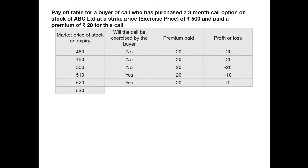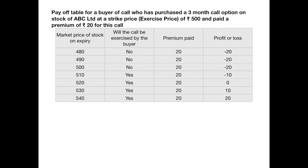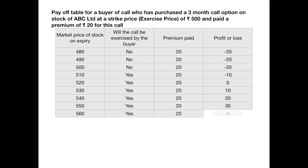If the market price is 530 and he has a right to buy the stock at 500, he's going to exercise it, making a profit of 30 rupees, but he's paid a premium of 20, so his net profit is 10. At 540, he exercises, making 40 rupees on the stock minus the premium of 20, giving a profit of 20. At 550, profit on the stock is 50 minus premium of 20, so net profit is 30. At 560, exercising gives a profit of 60 on the stock, minus premium of 20, giving a profit of 40.